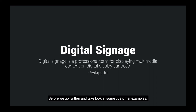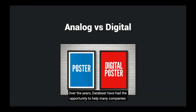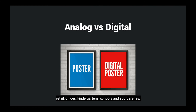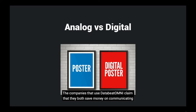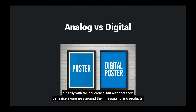Before we go further and take a look at some customer examples, let's look at what distinguishes analog versus digital communication. Over the years, DataBeat has had the opportunity to help many companies digitize and streamline their communications — from governmental institutions, retail, offices, kindergartens, schools and sports arenas. The companies that use DataBeat Omni claim that they both save money on communicating digitally with their audience, but also that they raise awareness around their messaging and products.